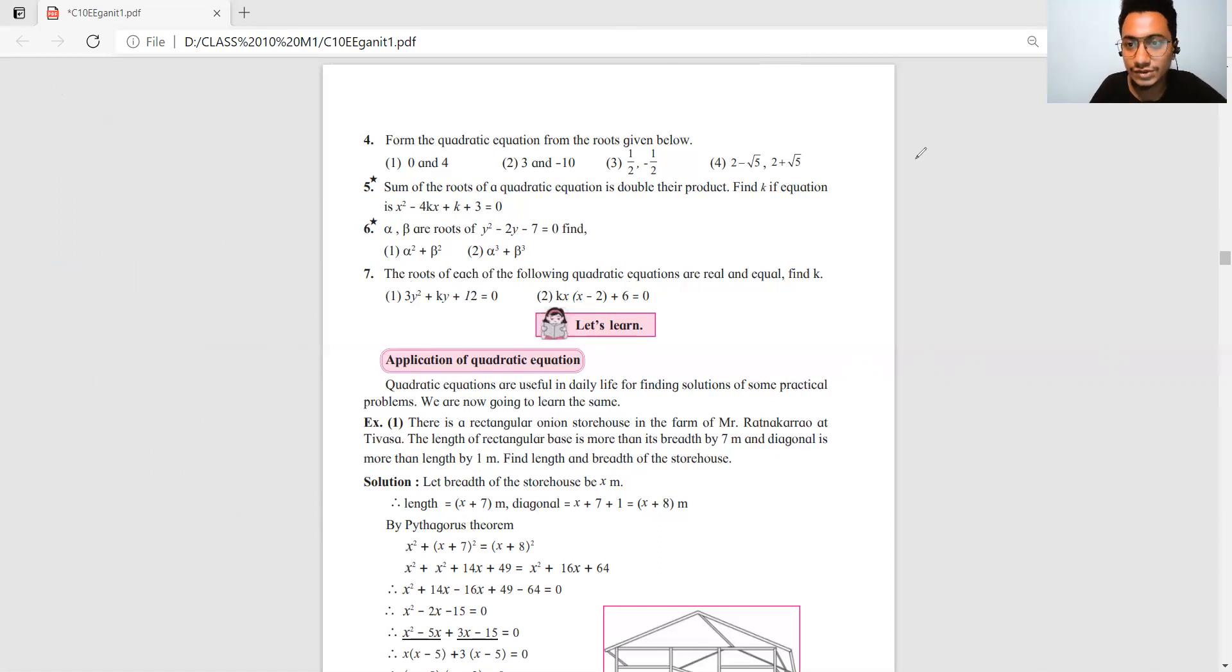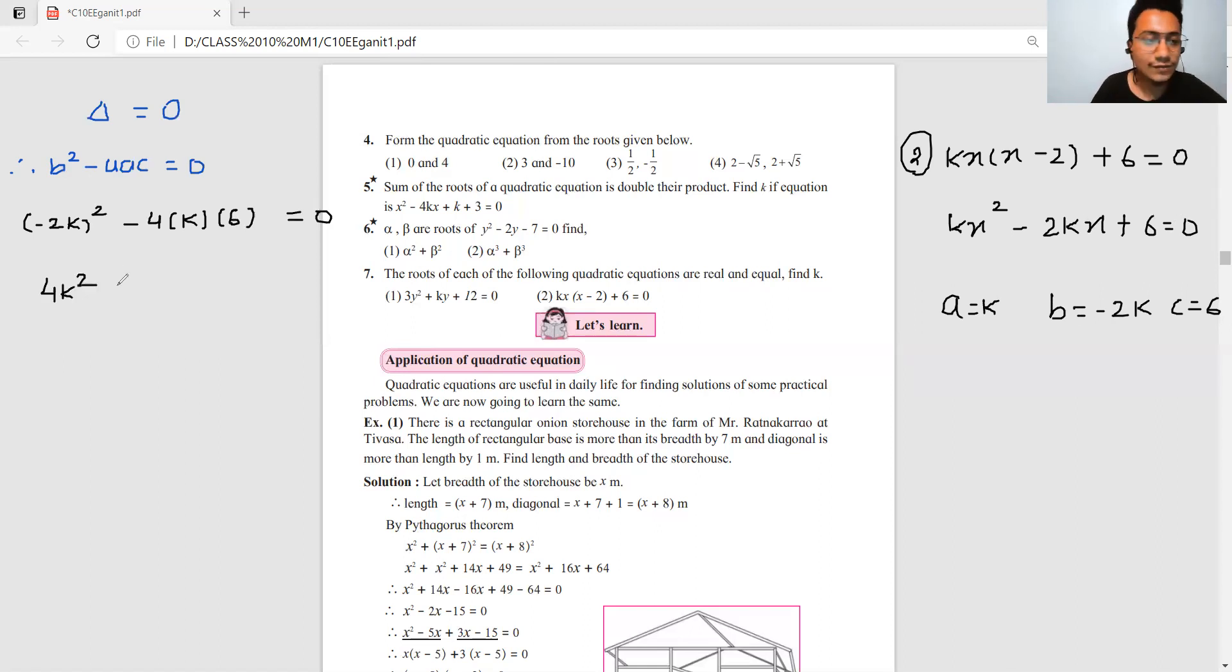Now last question, question number 8. The equation is kx times x minus 2 plus 6 equals zero. Solving this gives kx square minus 2kx plus 6 equals zero. So a equals k, b equals minus 2k, and c equals 6.